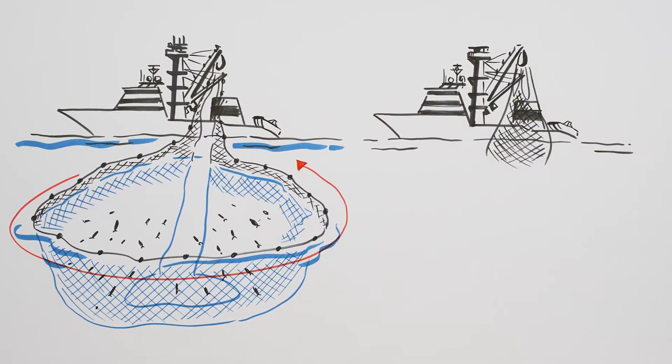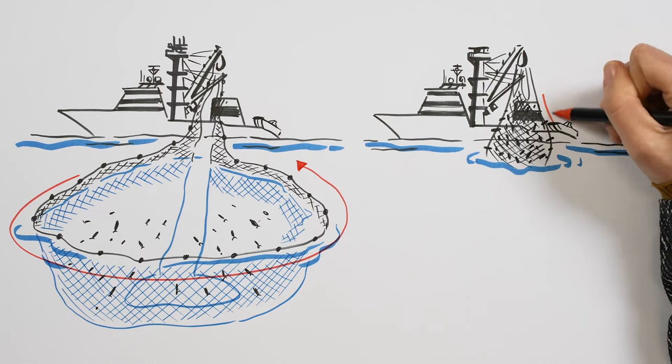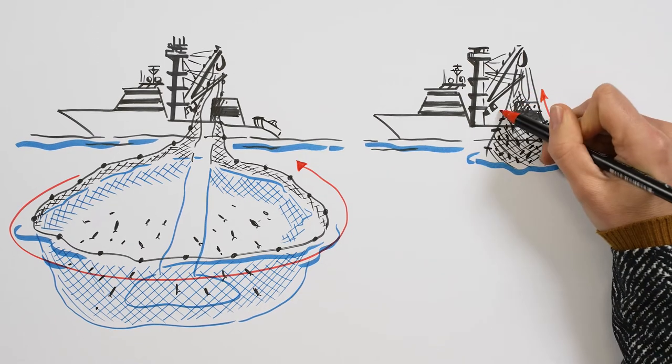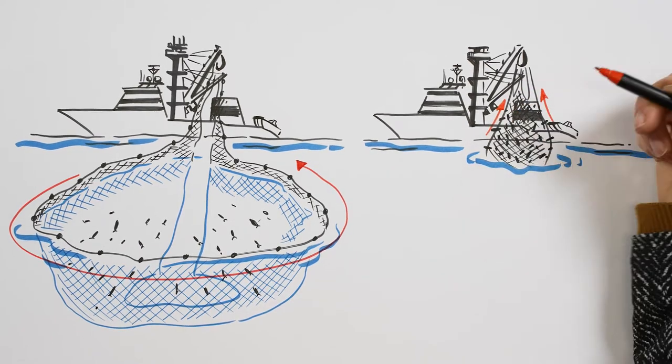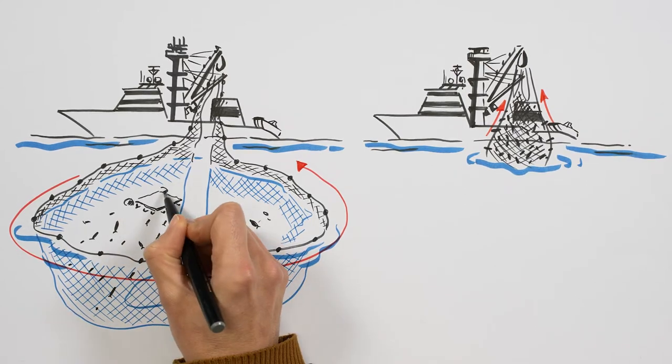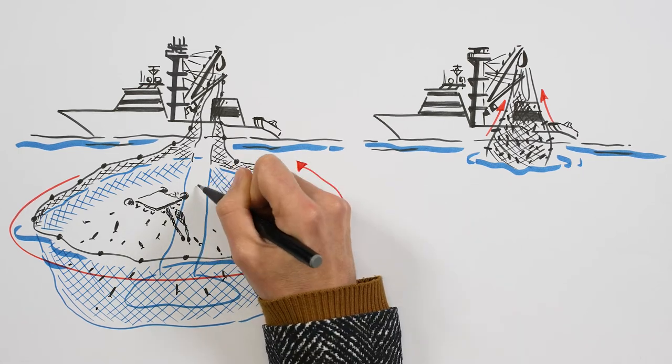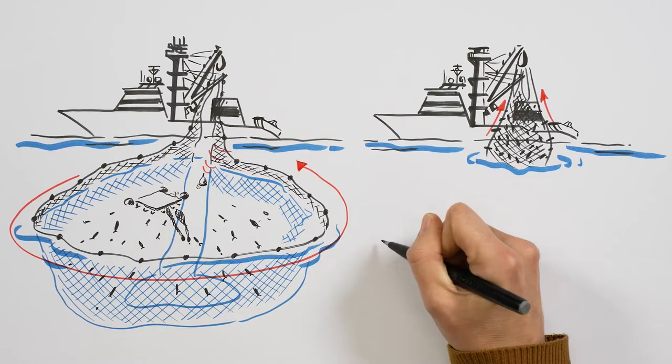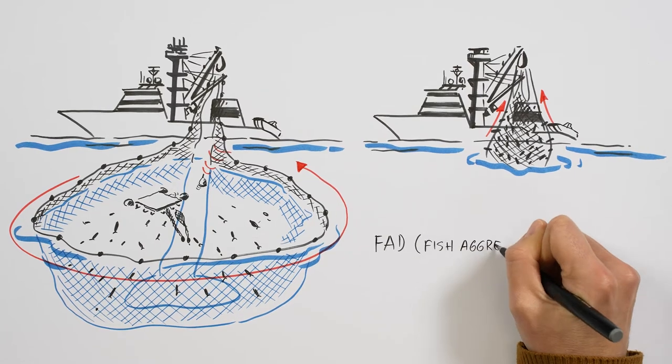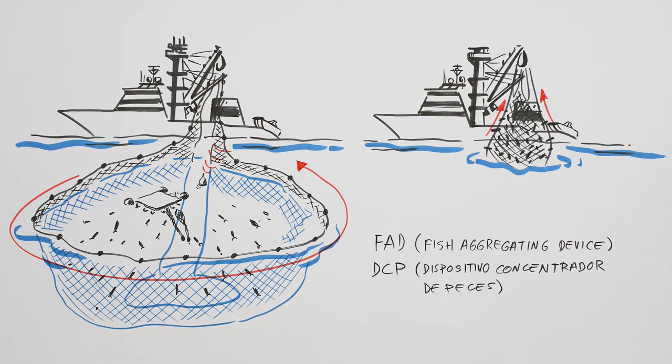Almost 70% of the world's tuna are fished with purse-seine gear. The schools of fish are surrounded by huge nets that are closed and pulled up like a giant bag. Almost all purse-seine fleets use FADs. FADs are floating platforms that drift along and signal their position with GPS technology. FAD is the acronym for Fish Aggregating Device, or DCP in Spanish.